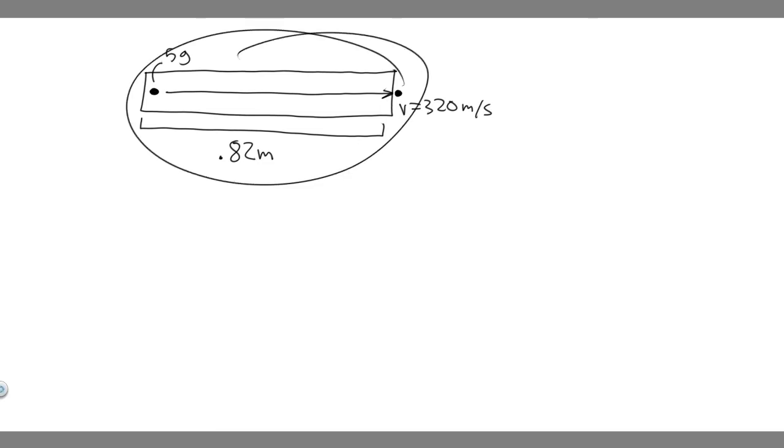So imagine this right here is our toy rifle. We've got this bullet here and it's going to start at rest, because it's in the toy rifle and then it's going to get powered by some gunpowder. It's going to travel all the way down and then leave it at 320 meters per second. We know it's going to travel a distance of 0.82 meters and we also know the mass is 5 grams.